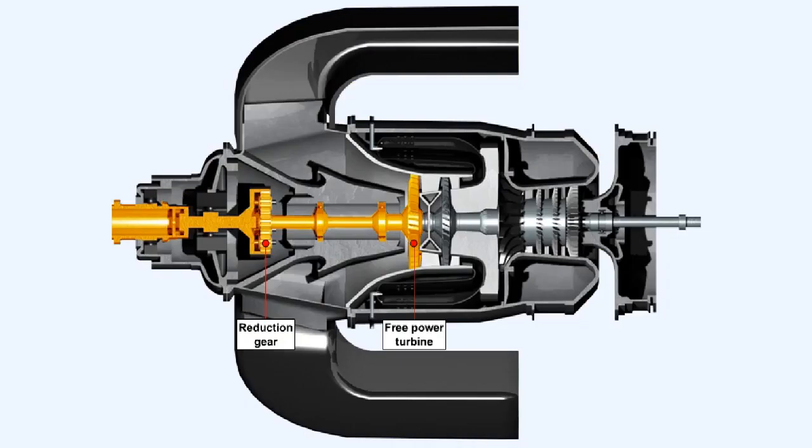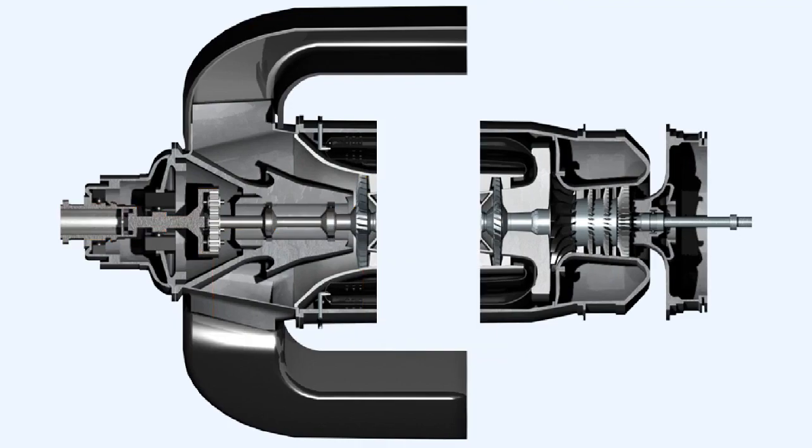A free turbine, sometimes called a free power turbine, is a turbine which is not connected to the compressor. It's connected only either to the propeller or to the rotor reduction gearbox. The fact that it's not connected to a compressor allows a free power turbine to seek its own optimum design speed rather than that of a compressor.